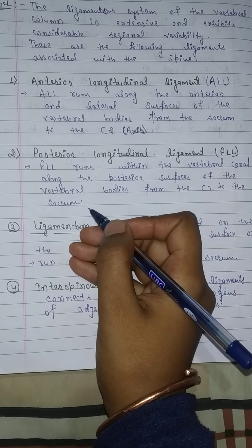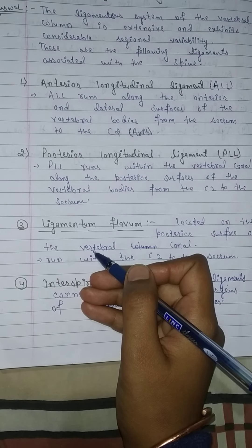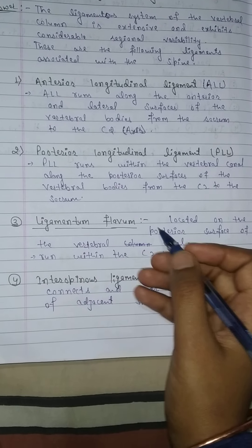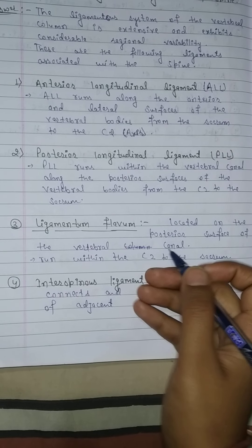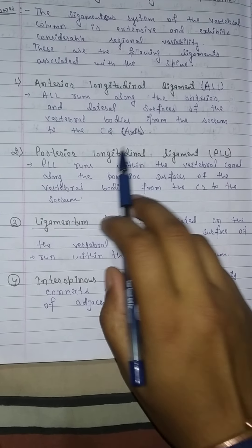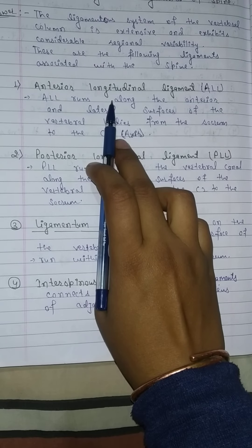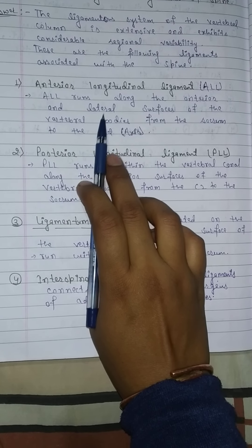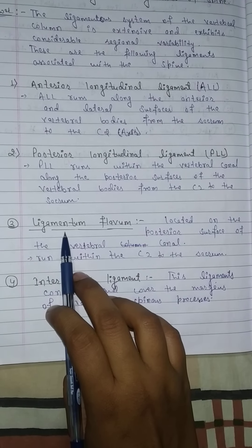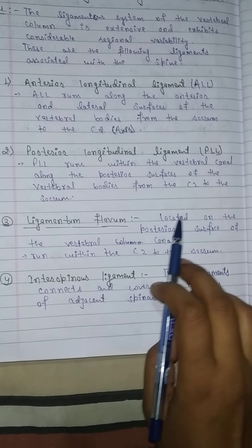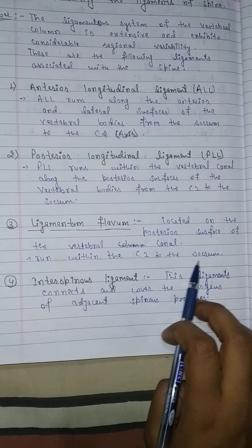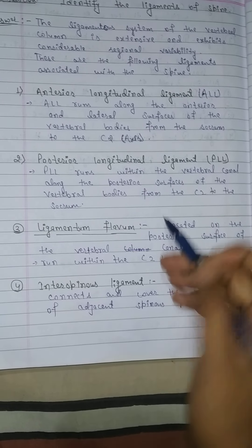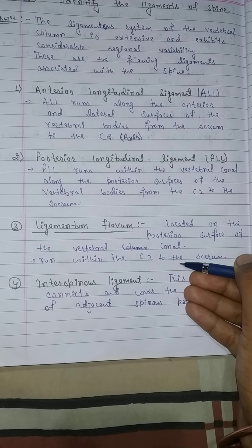The third ligament is the Ligamentum Flavum, which is located on the posterior surface of the vertebral canal. It runs from C2, the axis, to the sacrum. Note that the PLL is also on the posterior surface of the vertebral canal, while the ALL is on the anterior and lateral surface.